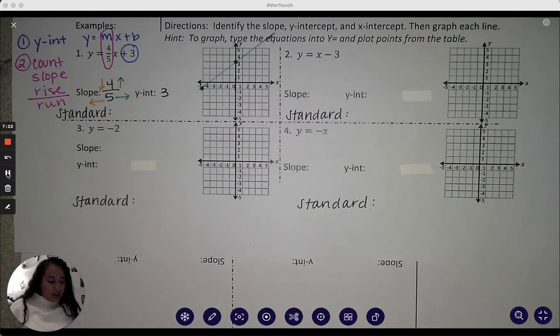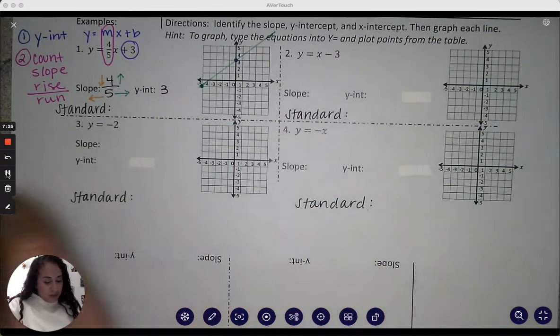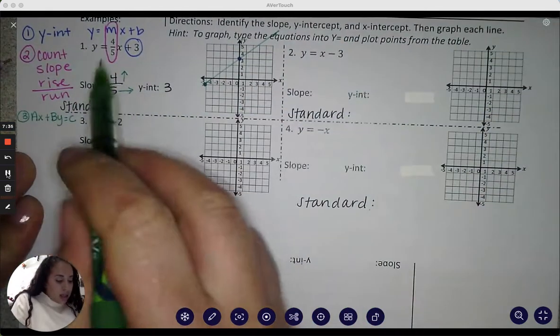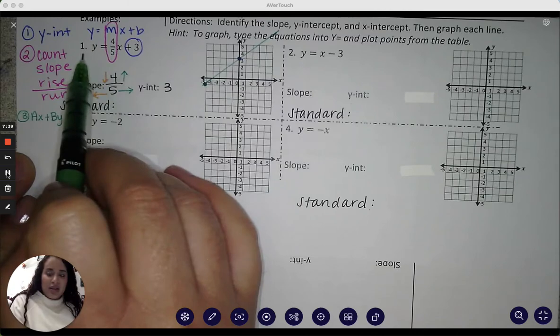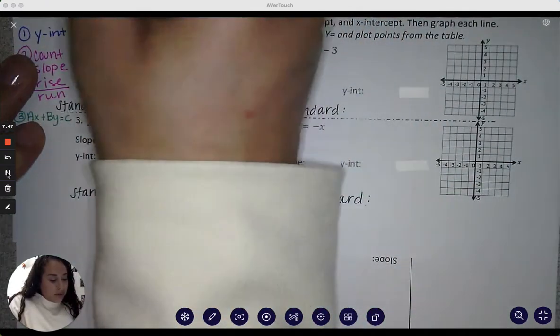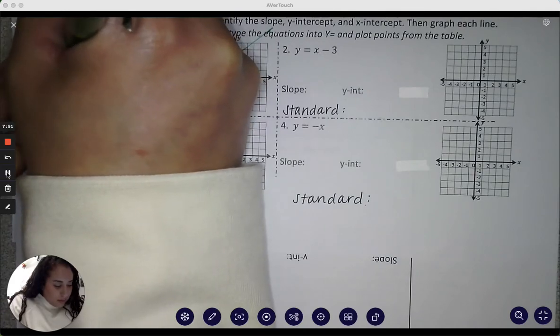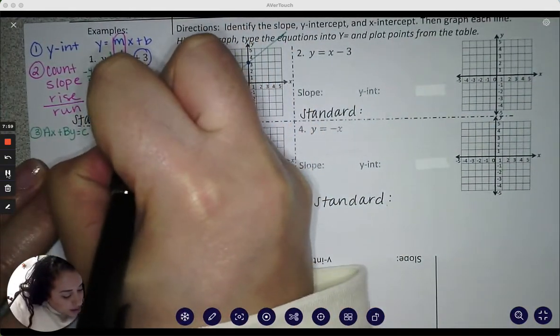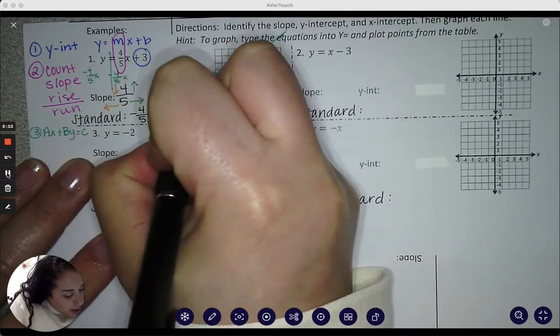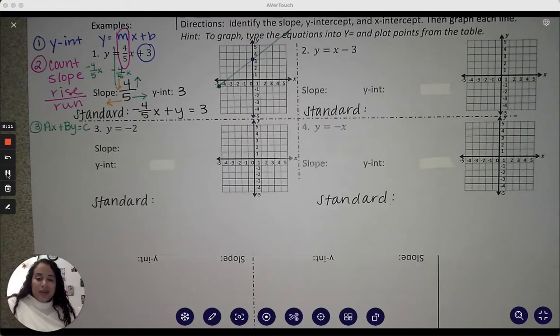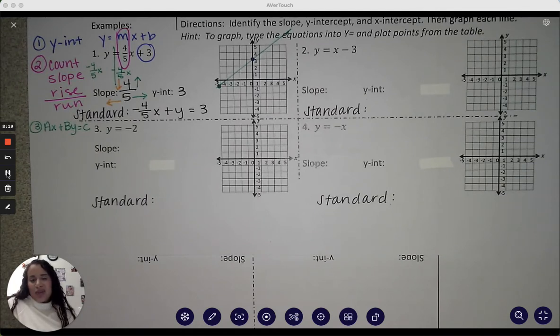So if I wanted to turn this equation into standard form, remember, standard is ax plus by equals c. That means I need to move the slope and the x to the other side in front of the y. So if it's positive, I'm going to make it negative 4 fifths x. So if I subtract it from one side, I have to subtract it from the other. So the standard form becomes negative 4 fifths x plus y equals 3. Now, there's some other tips and tricks when it comes to fractions. A lot of people don't like the fractions. That's fine. And there's ways to get rid of it, but they're also kind of complicated. So let's get one for now. We'll come back to it.